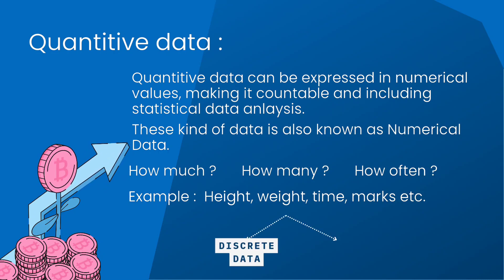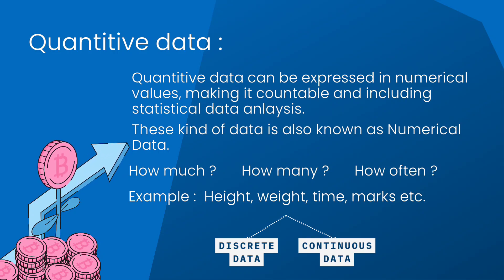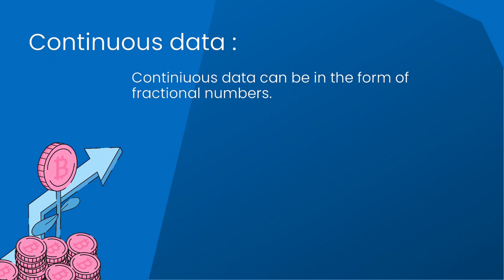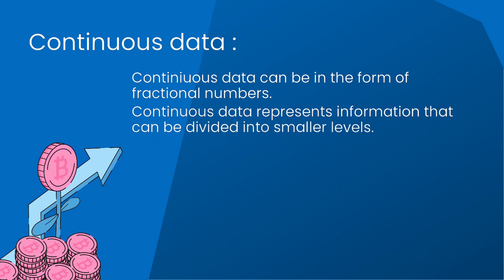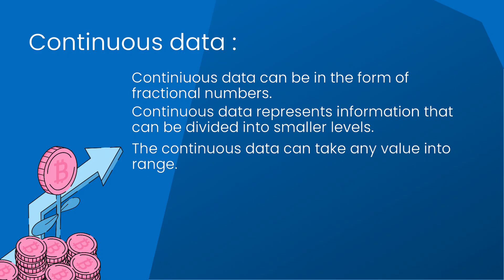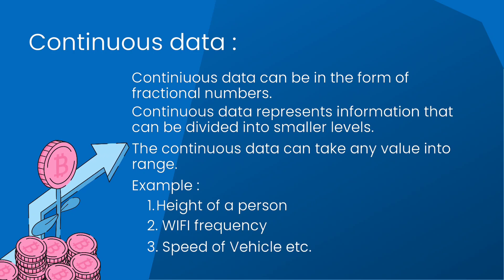Quantitative data is further classified into two parts: discrete data and continuous data. The term discrete means distinct or separate. Discrete data contains values that fall under integers or whole numbers. Discrete data are countable and have finite values, and their subdivision is not possible.